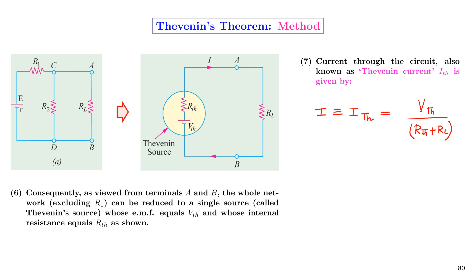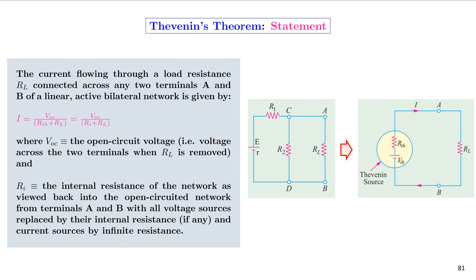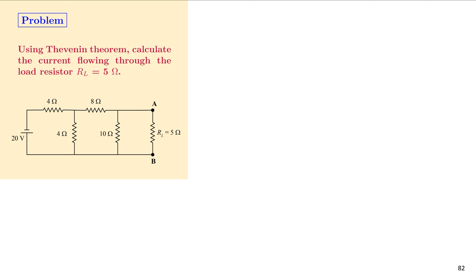This is how we reduce any electrical network using Thevenin's theorem. To summarize: if we have a complicated electrical network with voltage or current sources, resistors, and a load resistor RL at the output terminals, the network can be reduced to one having a single voltage source in series with single resistance Rth. In the given problem, we have a 20V source, four resistors (4 ohm, 8 ohm, 4 ohm, 10 ohm), and a load resistor RL equal to 5 ohm connected between terminals A and B. We must reduce this network and calculate the current IL through RL.